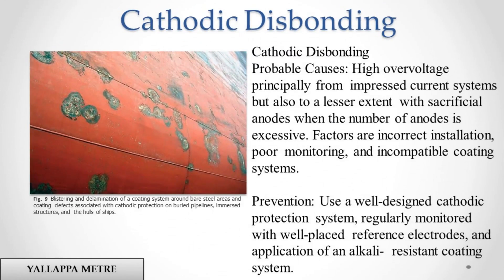Cathodic Disbonding. Probable causes: high over-voltage, principally from impressed current systems, but also to a lesser extent with sacrificial anodes when the number of anodes is excessive. Factors include incorrect installation, poor monitoring, and incompatible coating systems. Prevention: use a well-designed cathodic protection system, regularly monitored with well-placed reference electrodes, and application of an alkali-resistant coating system.